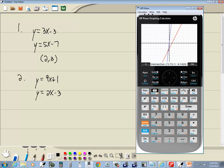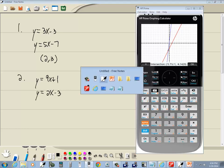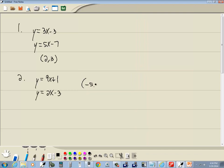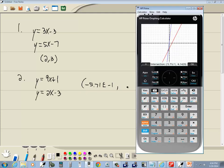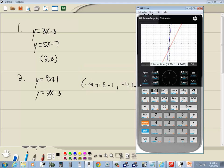And we get something that's a little bit not what we expected. Negative 5.71 e to the negative 1 and negative 4.1429. Okay. That's our intersection. Let me write that down. Negative 5.71 e to the negative 1 comma negative 4.1429.